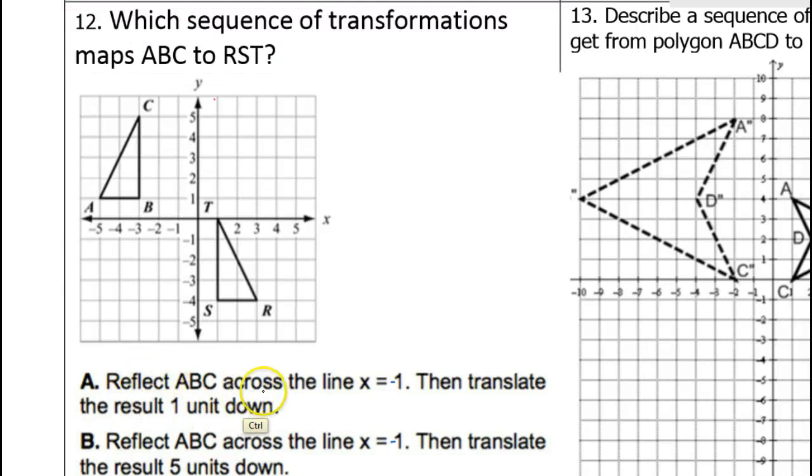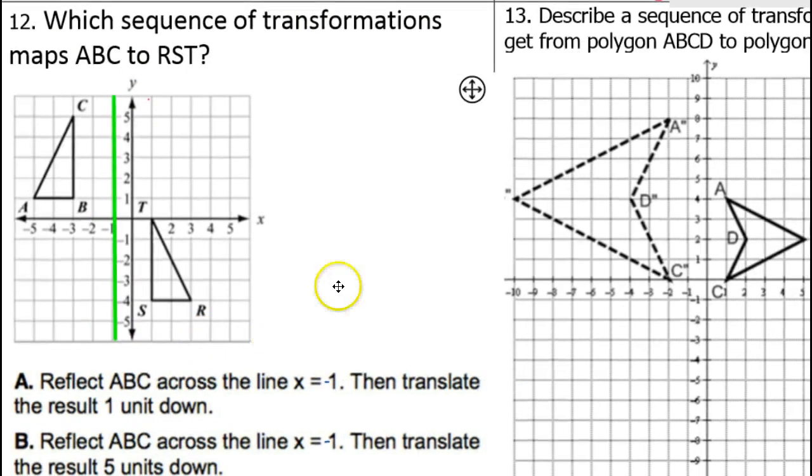Let's check this out. If we reflect triangle ABC across the line x equals negative 1, the line x equals negative 1 is a vertical line at negative 1 like this. Let's use that as our reflection line. Notice how point A is 4 units to the left of this line, so the reflection would be 4 units to the right. Point B is 2 units to the left, so B prime would be 2 units to the right. Point C is 2 units to the left, C prime would be 2 units to the right. This would be the reflection over the line x equals negative 1.